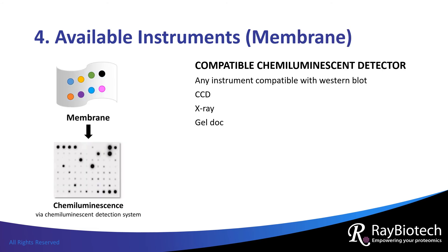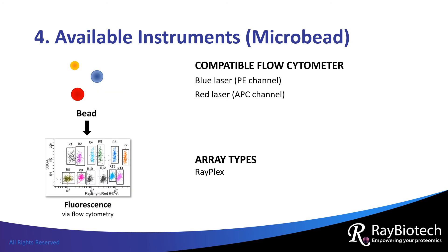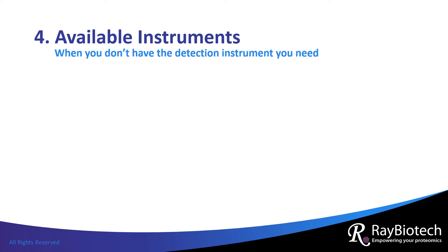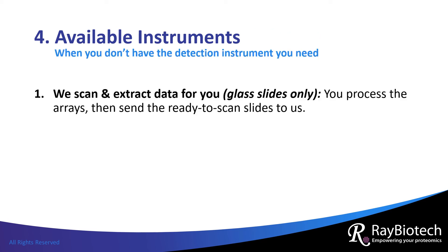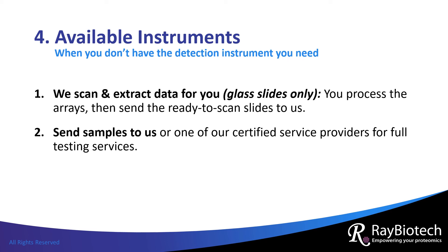Membrane-based arrays with chemiluminescent signals can be detected using any instrument that works with a Western blot. Arrays with a membrane substrate include C series, L series, and the phosphorylation array. Our bead-based Rayplex array is compatible with any flow cytometer equipped with blue and red lasers. If you don't have the appropriate instrumentation, we can scan and extract the data for you. Free scanning and data extraction for all Ray Biotech glass slides are available at our Georgia location, or you can send your samples to us and we'll do everything for you as part of our full testing services.